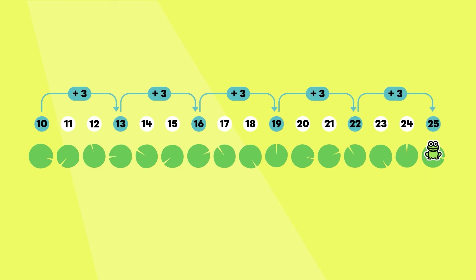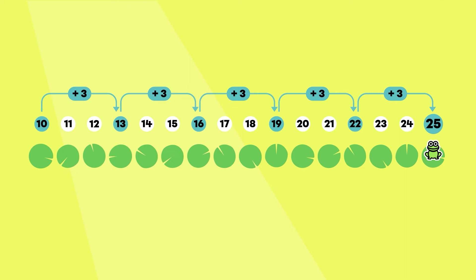When we skip counted by three, the frog landed on the numbers ten, thirteen, sixteen, nineteen, twenty-two, and twenty-five.